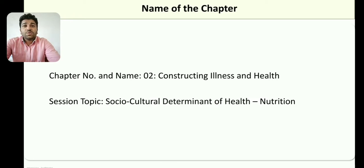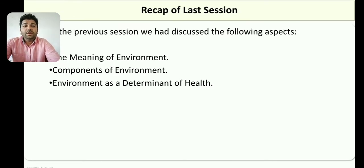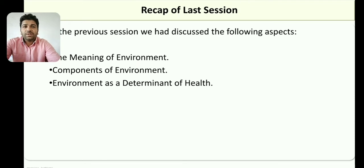This is with reference to the second chapter, constructing illness and health, and the session's topic is about socio-cultural determinants of health and nutrition. In the previous session I had discussed about the meaning of environment, its five components, and how environment is a determinant of health. So these aspects have been covered in the previous session.